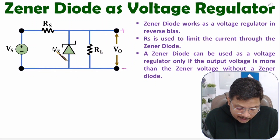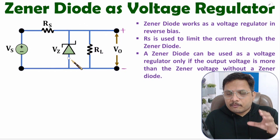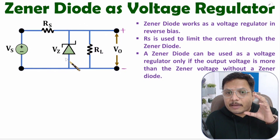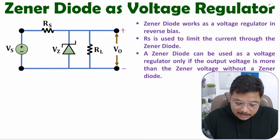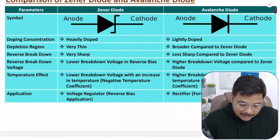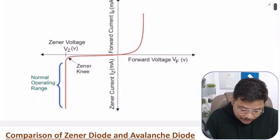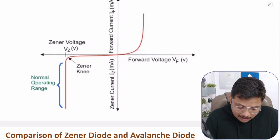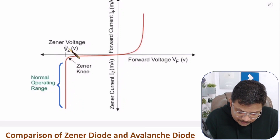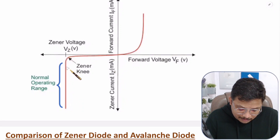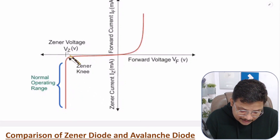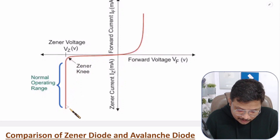Once breakdown of the Zener diode happens, voltage across the Zener will remain constant. In the characteristics, I have explained that: when you keep this Zener diode in reverse bias, once breakdown happens, voltage across the Zener will remain constant. After Zener voltage Vz, voltage remains constant.